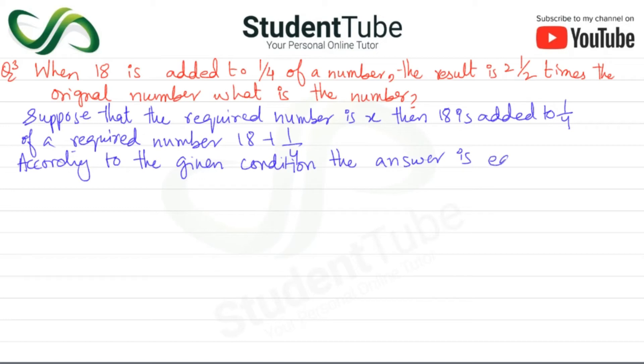Times the original number. Okay, now we have written our whole statement. Now 18 plus 1/4 is equal to 2 1/2 x.